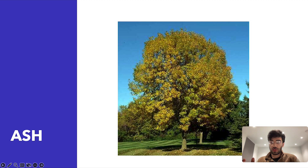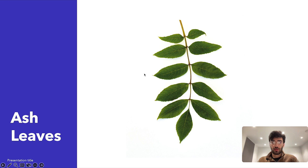So that's the alder tree — alternating buds and found near water. Moving on to the ash tree, another common tree in Britain. The leaves are actually quite big. I think you'd classify this whole image as a leaf, even though it's a compound leaf with many sections — similar to the horse chestnut leaf we'll come on to. There's a stem with multiple little leaflets coming off, and they're slightly serrated. I think this is quite iconic of an ash leaf.